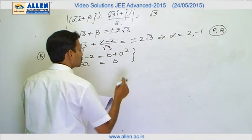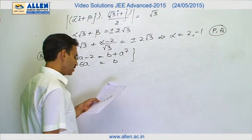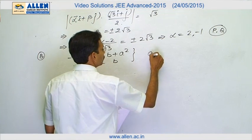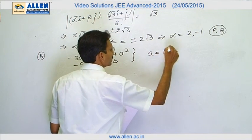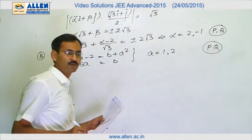We will solve these two equations. We will eliminate B and get a quadratic in A which is A square minus 3A plus 2 equals to 0 gives us A as 1 and 2. So the correct choices are P and Q for the B part.